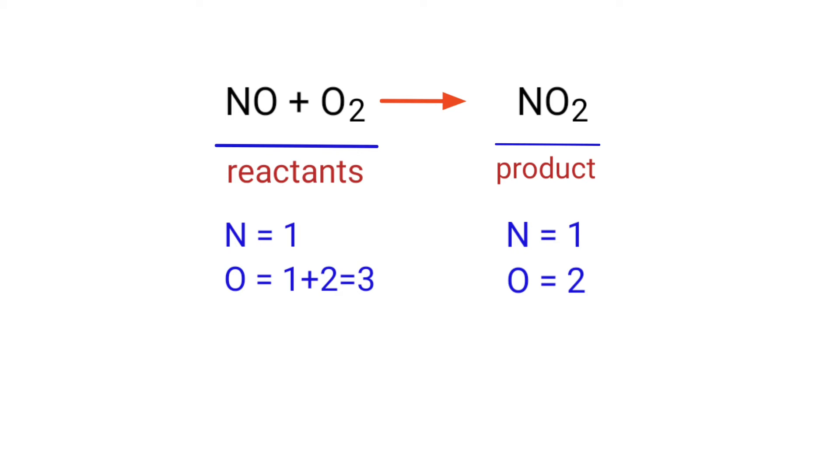The number of atoms are not balanced on both sides. To balance the chemical equation, we need to make use of coefficients. A coefficient is a number that we place in front of a chemical formula.